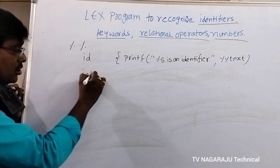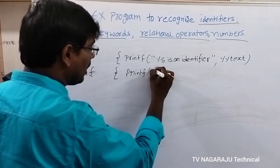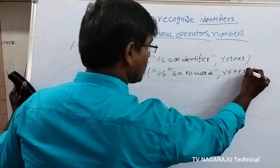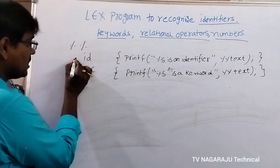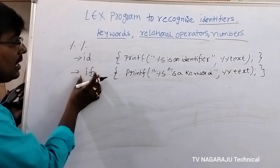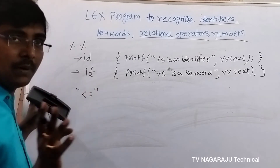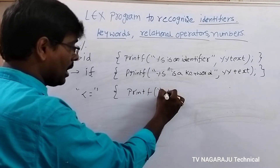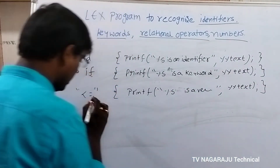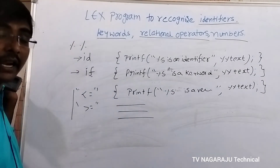Similarly for keywords such as 'int', 'if', 'while', 'for', you write the pattern and the action: printf("%s is a keyword", yytext); Any number of keywords can be listed with their corresponding actions. For relational operators such as <=, >=, <, ==, !=, the action is: printf("%s is a relational operator", yytext); Write down the corresponding actions for all relational operators.